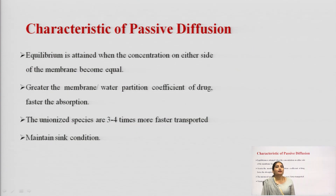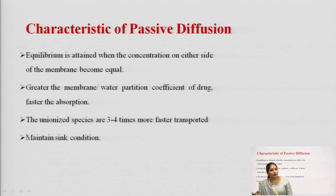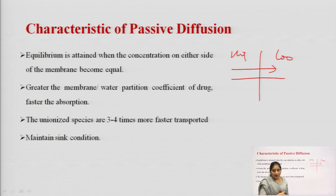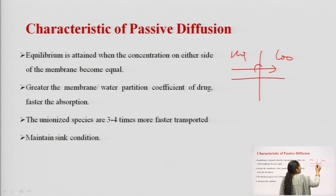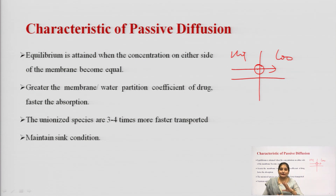Equilibrium is attained when the concentration on either side of the membrane becomes equal. The drug moves from higher concentration to lower concentration until equilibrium is reached — when concentrations on both sides are equal. However, in practice, this does not happen in case of passive diffusion.